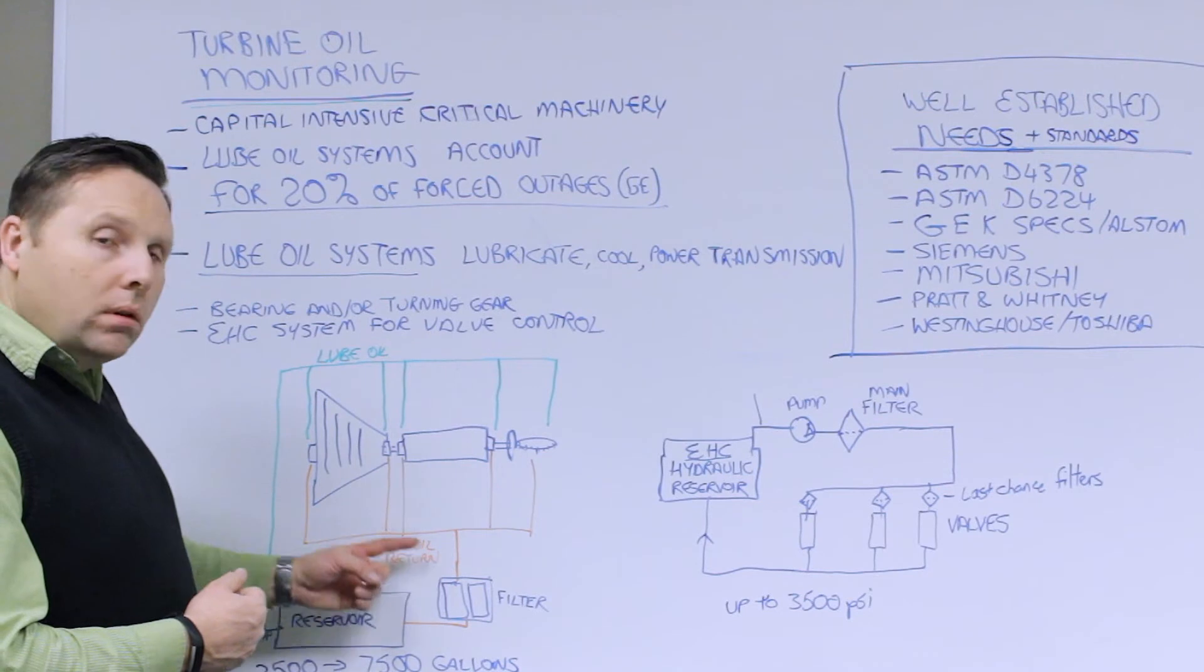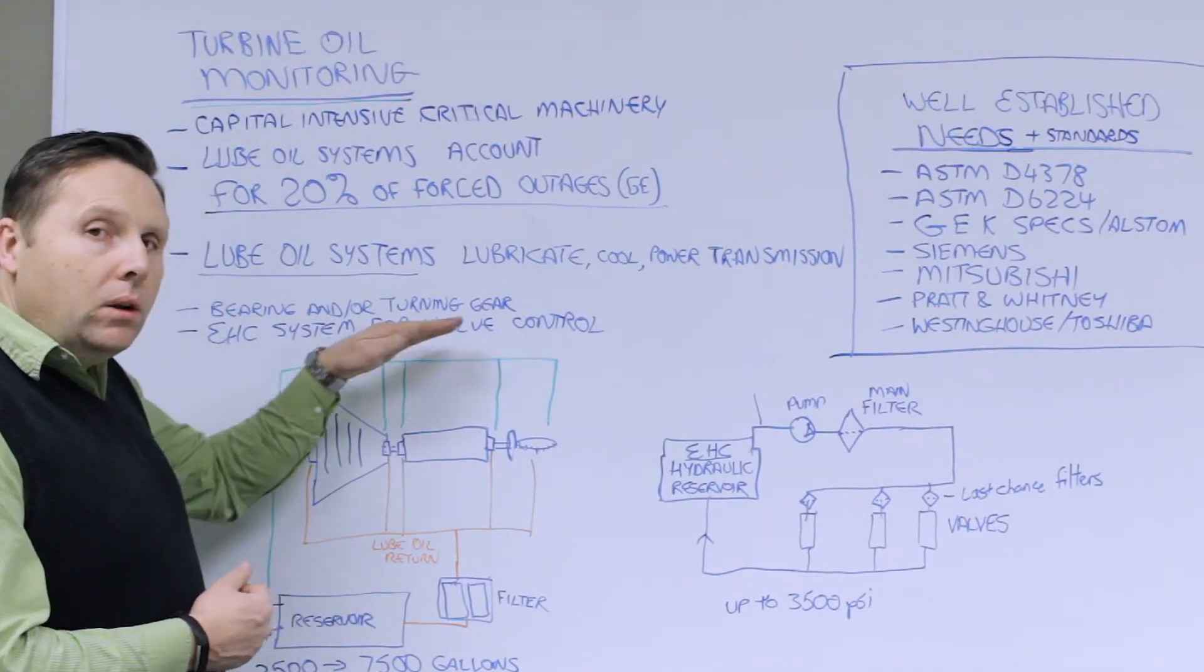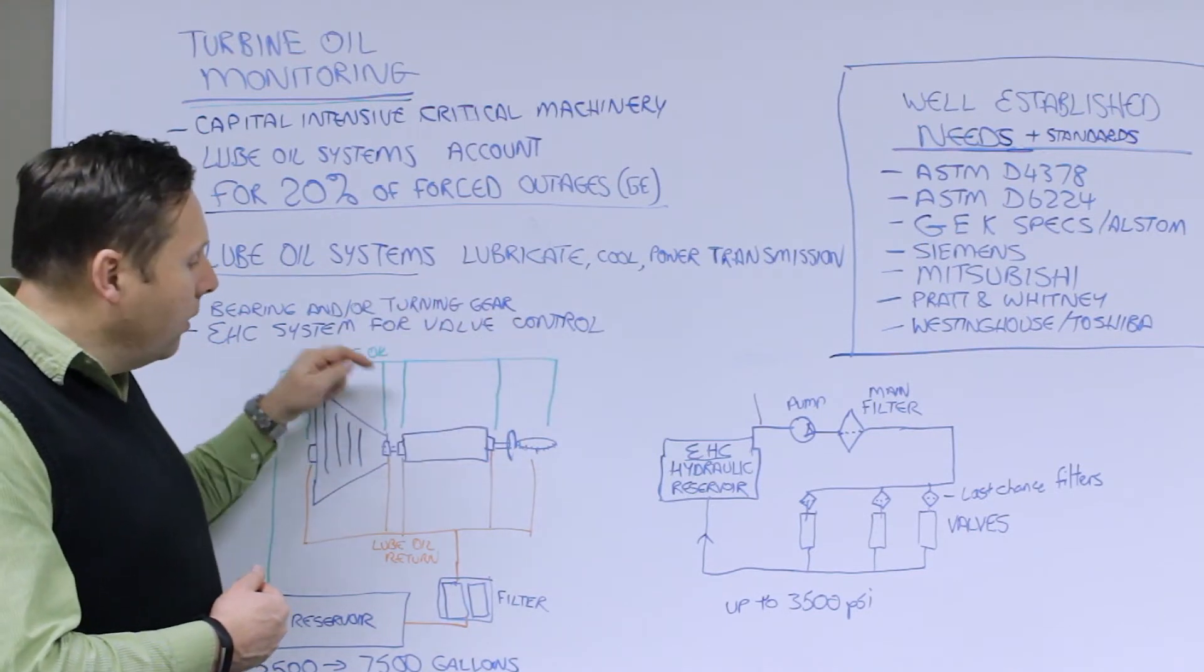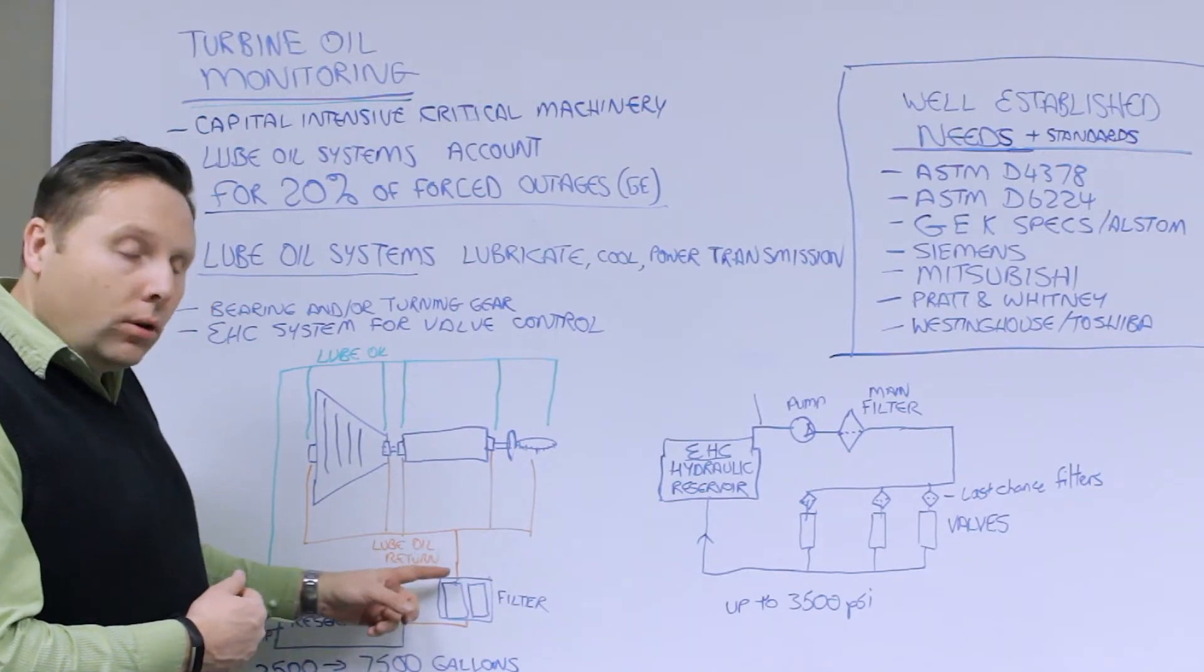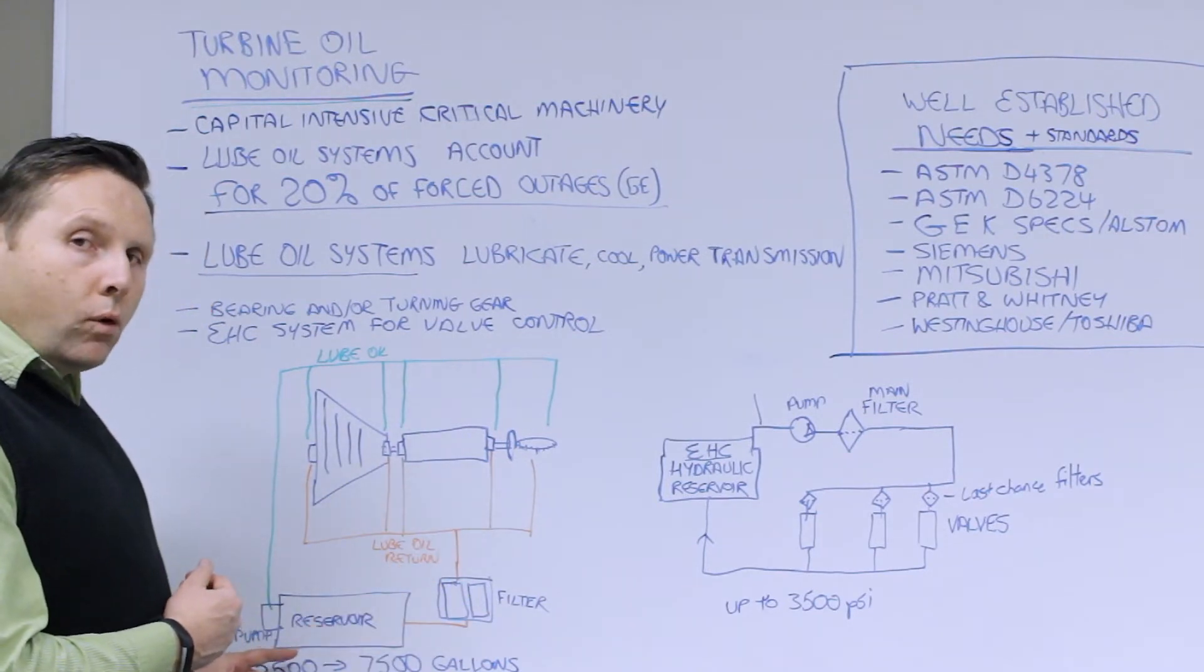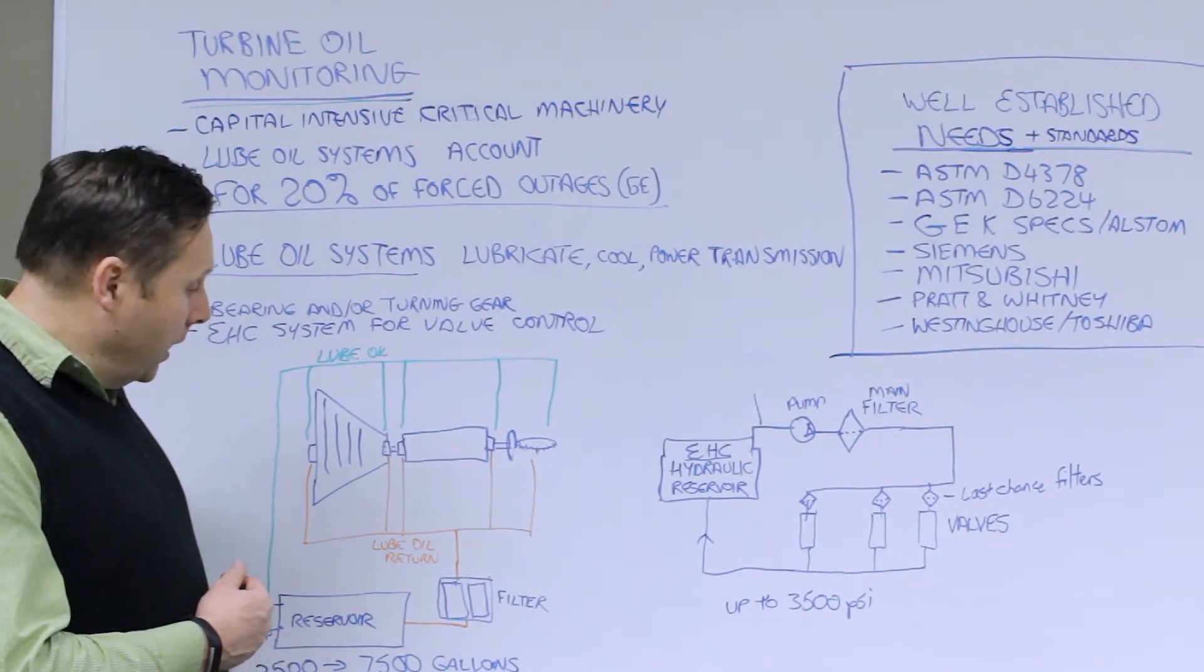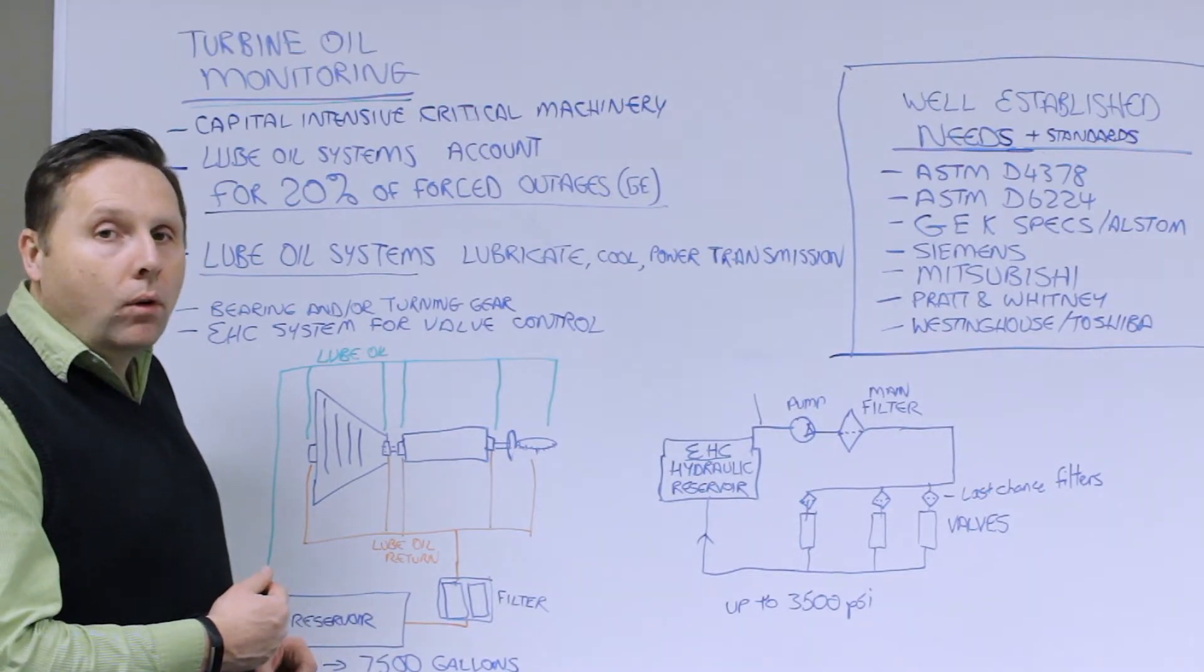And what we have is some sort of centralized lubrication system where we're pumping fresh clean oil up into the system and then gravity fed or pressure fed at a low rate through the bearings and then all comes back, gets filtered back into a large reservoir. These reservoirs are quite large. They can be anywhere from on steam turbine systems from 2,500 to maybe 8,000 gallons of oil.